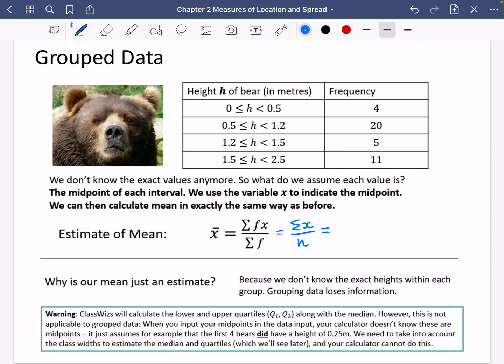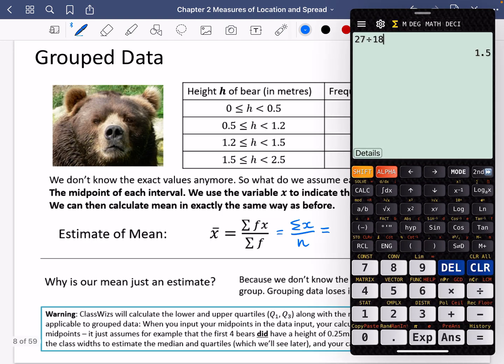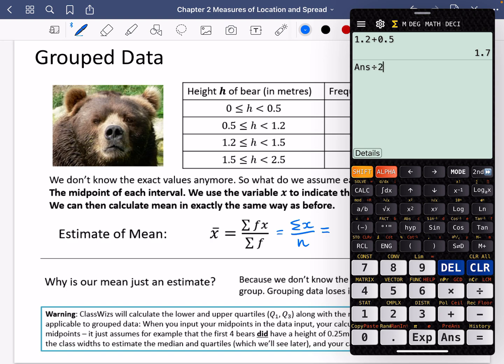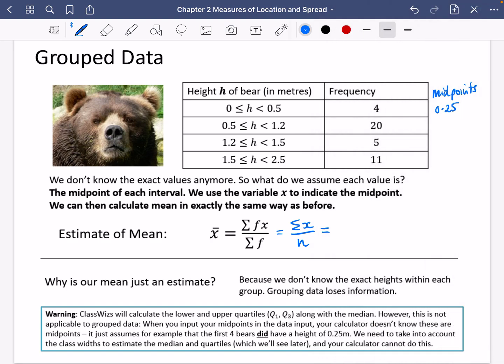I'm going to do this one just using the Class Wiz calculator, but I think what I should do beforehand is find out what the midpoints are going to be. So the midpoints between 0 and 0.5 are going to be 0.25. If you want to find a midpoint, you know that you can add the two values and divide it by 2. So I'm going to do 1.2 plus 0.5 and divide it by 2. So it's 0.85.